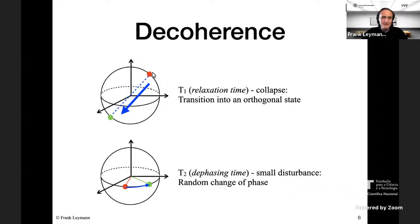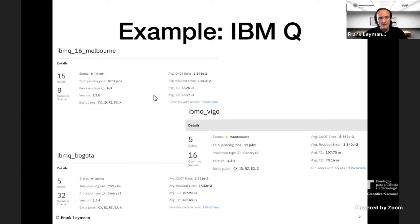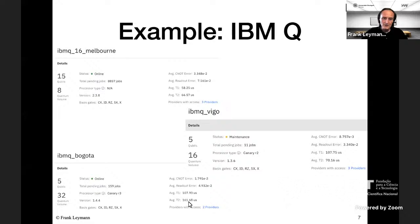A qubit on the Bloch sphere may collapse into an orthogonal state — this is called the T1 time, the relaxation time. Additionally, the qubit may jitter slightly without collapsing — the phase may change randomly, which is called the dephasing time T2. Two years ago, T1 was about 60 microseconds; with IBM's quantum volume measurement, it has reached 107 microseconds for coherence time, and T2 is about 160 microseconds — improving year after year as technology improves.